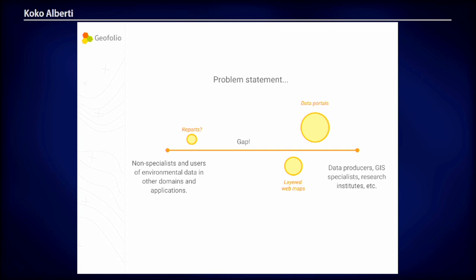The problem statement, or the reason for getting into this space for me, was a long frustration with the way the geo community spreads its data around. On the right we have us — data producers, GIS specialists, research institutes — people that make really nice datasets available. But it's a long way to other types of users, non-specialists, people who really want to use environmental data but find it difficult. They don't know too much about GIS. And there are a lot of blockages on the way.